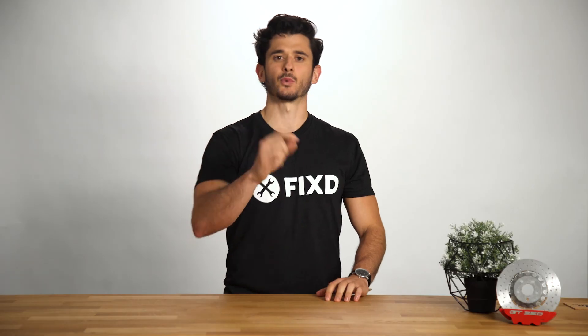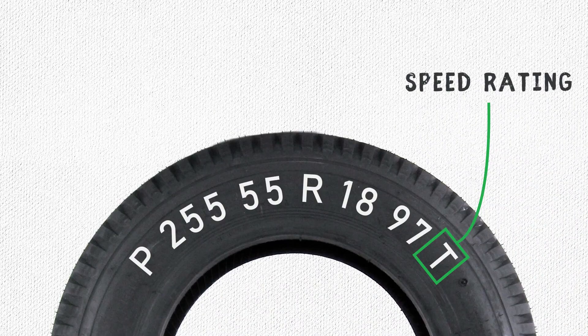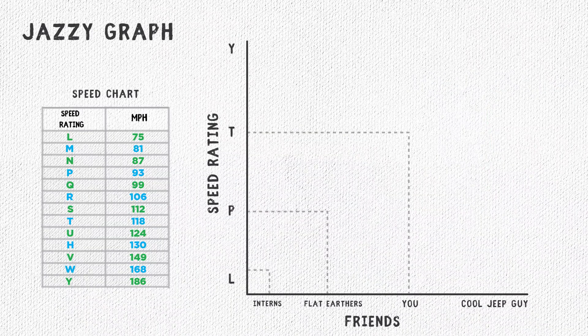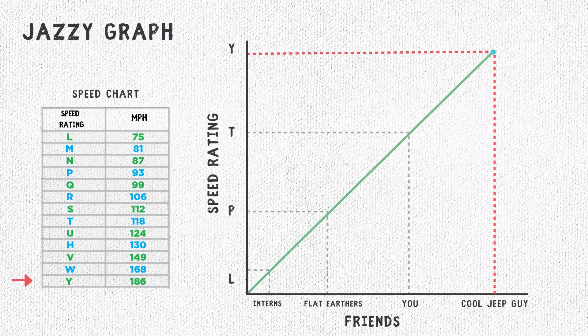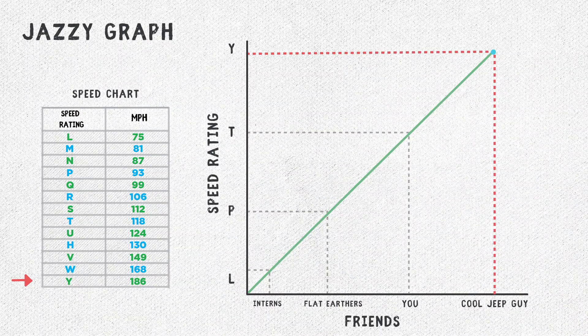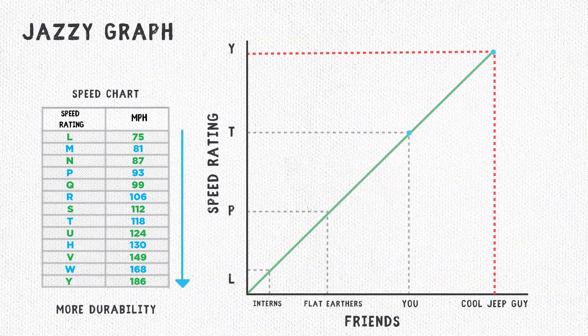In 1991 we decided more means more, so now every tire has a service description rating. This helps identify your load index and your speed rating. As you can see from the graph, if you're looking to buy a Y-level tire, you probably have a cool car and lots of cool friends. As speed ratings go up, you tend to get a sturdier, more durable tire. But don't just buy the fastest tire — a higher rating could mean higher cost. If you spend most of your life going under 100 miles per hour, you're probably fine getting an S to H rated tire.